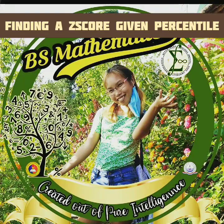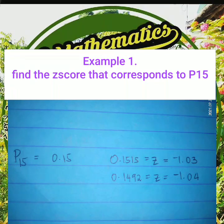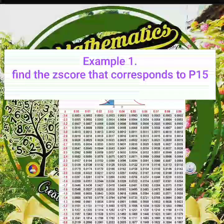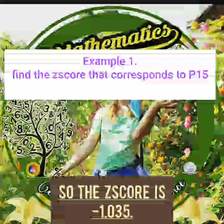Here are some examples on finding a z-score given a percentile. Number 1: find the z-score that corresponds to the 15th percentile. This is the same z-score that corresponds to an area of 0.15. The areas closest to 0.15 in the table are z = −1.03 corresponding to 0.1515, and z = −1.04 corresponding to 0.1492. Because 0.15 is halfway between the two areas, use the z-score halfway between them: z = −1.035.